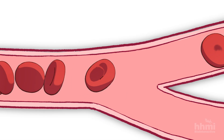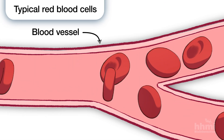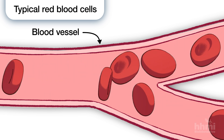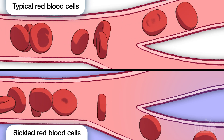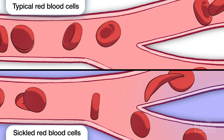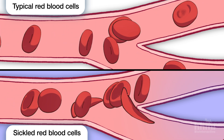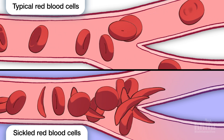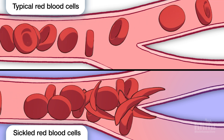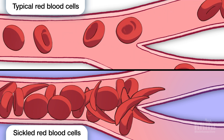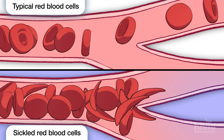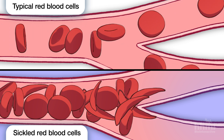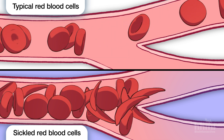Typically, red blood cells have a disc shape that allows them to move throughout the body with ease. Sickle cell disease makes the red blood cells more rigid and changes their shape to a crescent moon or sickle shape. That rigidity causes them to block blood vessels, not allowing blood to get to different parts of the body, causing severe and debilitating pain.